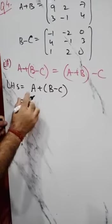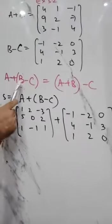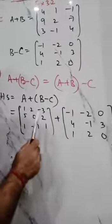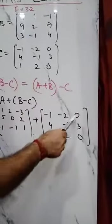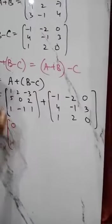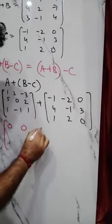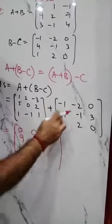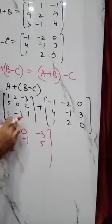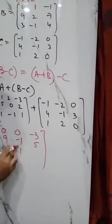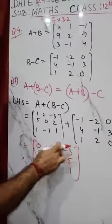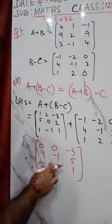For the left hand side, matrix A is 1, 2, minus 3; 5, 0, 2; 1, minus 1, 1. And B minus C we already computed as: minus 1, minus 2, 0; 4, minus 1, 3; 1, 2, 0. Now let us add them: 1 plus minus 1 is 0, 2 plus minus 2 is 0, minus 3 plus 0 is minus 3. Second row: 5 plus 4 is 9, 0 plus minus 1 is minus 1, 2 plus 3 is 5. Third row: 1 plus 1 is 2, minus 1 plus 2 is 1, 1 plus 0 is 1. So LHS equals: 0, 0, minus 3; 9, minus 1, 5; 2, 1, 1.